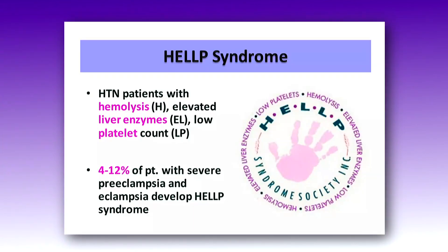I would like to explain about HELLP syndrome before moving to preeclampsia in detail. Usually 4 to 12 percent of patients with severe preeclampsia and eclampsia can develop HELLP syndrome. Here there will be high BP, along with hemolysis, elevated liver enzymes, and low platelet count. If we see hemolysis, increased liver enzymes, and low platelet count, we can suspect HELLP syndrome.